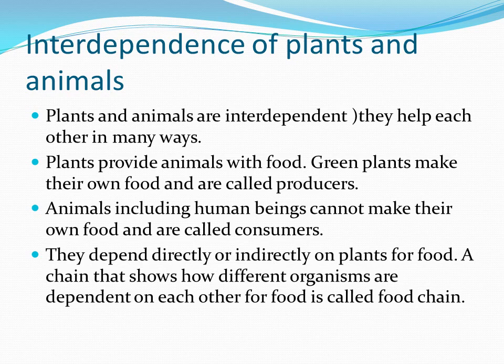Animals and human beings depend directly or indirectly on plants for food. This interdependent relationship is called a food chain. Plants and animals are interdependent and help each other in many ways.